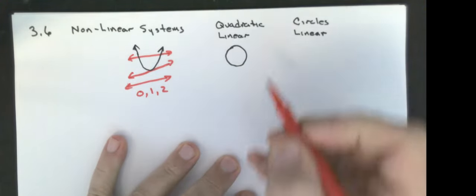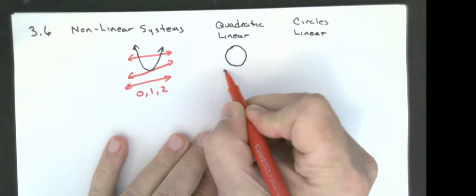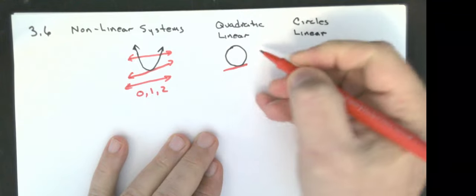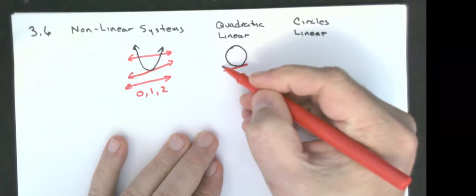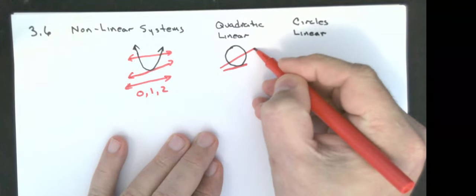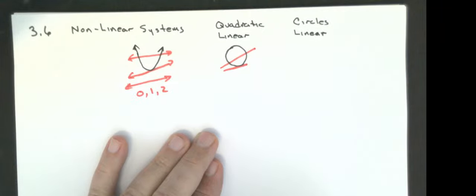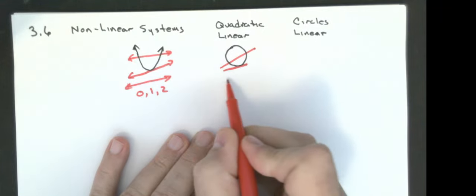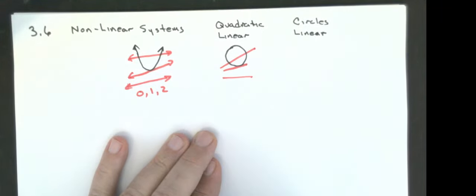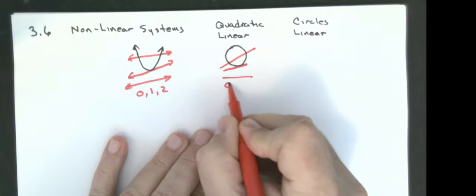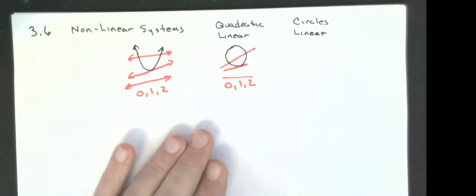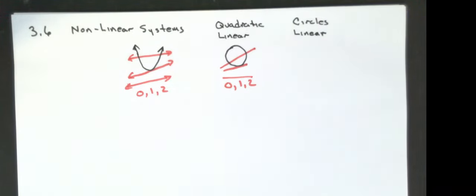For a circle, I could touch it once, a whole bunch of different places. I can touch it twice, or I could touch it not at all if the line never crosses the circle. So again, I can have 0, 1, or 2 solutions.